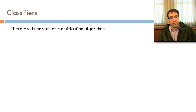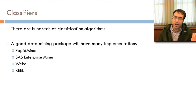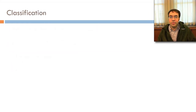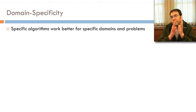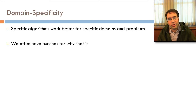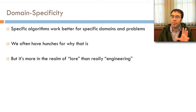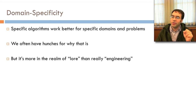There are hundreds of classification algorithms, and a good data mining package will have a lot of different implementations — packages like RapidMiner, SAS Enterprise Miner, WEKA, or PEEL. You might not actually want to try several hundred, though, for various reasons we'll get into later. One issue is domain specificity. Specific algorithms work better for specific domains and problems. We have hunches for why that is, but it's more in the realm of lore than engineering — we don't really know why certain algorithms are so much better in specific domains.